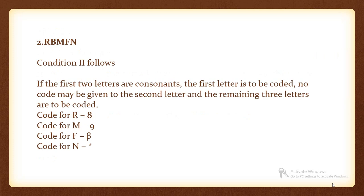Condition 2 follows. If the first two letters are consonants, the first letter is to be coded, no code may be given to the second letter and the remaining three letters are to be coded. Code for M is 9, code for F is beta, and code for N is asterisk.